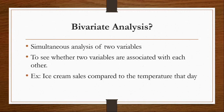An example goes like this: ice cream sales compared to the temperature on that day. Here you see two variables — one is about ice cream sales and another is about temperature. Another example: we can compare traffic accidents with weather on that particular day. If the weather is bad and rainy, we can compare the traffic accidents as well. One more example is weight versus height.